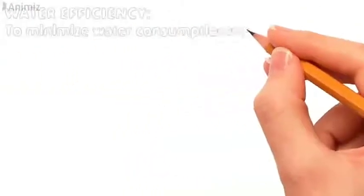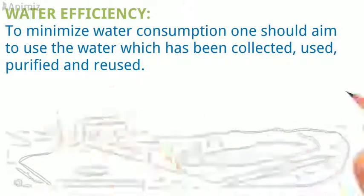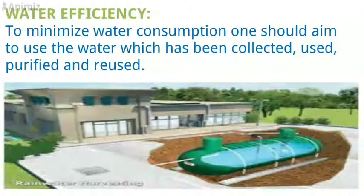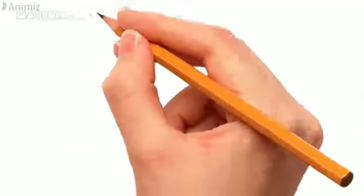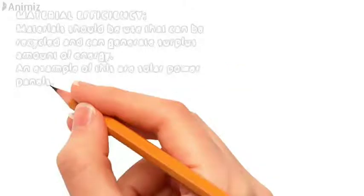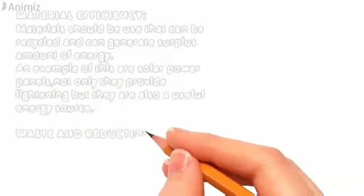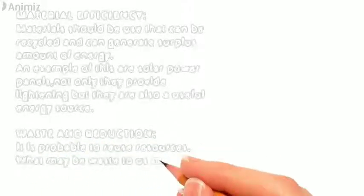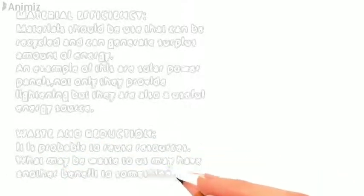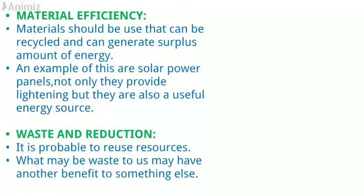To minimize water consumption, one should aim to use the water which has been collected, used, purified and reused. Material efficiency: materials should be used that can be recycled and can generate surplus amount of energy. An example of this are solar power panels. Not only they provide lighting but they are also a useful energy source. Waste and reduction: it is possible to reuse resources. What may be waste to us may have another benefit to something else.